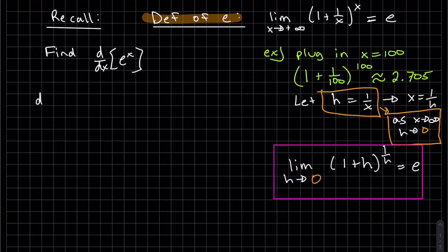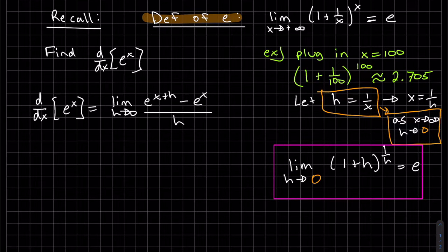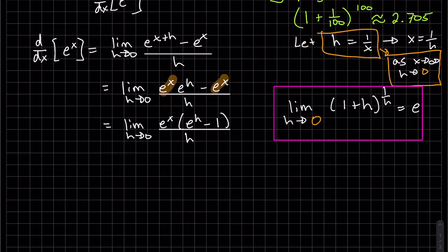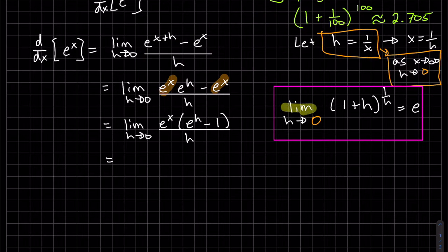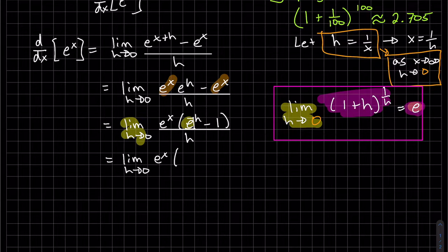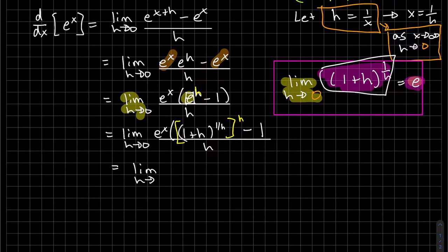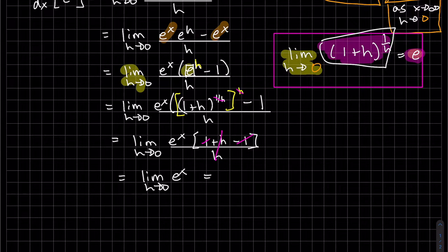We're going to use the definition of derivative: f of x plus h minus f of x, all over h. Let's do a little bit of algebra. This is where we're going to use this fact right here. We have this e and we have the limit as h goes to 0. We have this expression, and I'm going to replace this e with that limit form. Those are the same h's. Power to power, those will cancel. We get h over h, and since h is not plugged in for 0, we get e to the x.